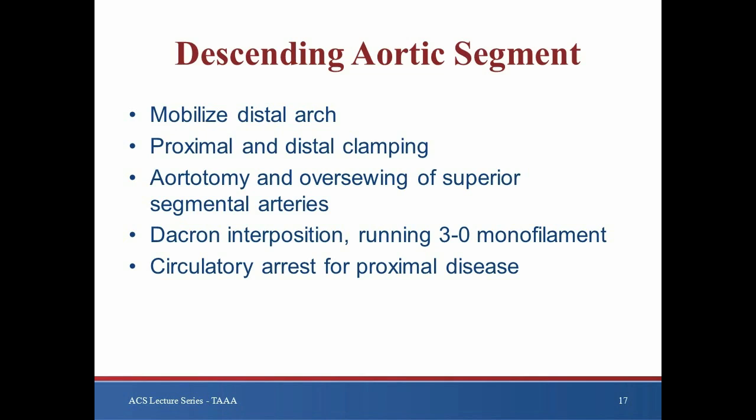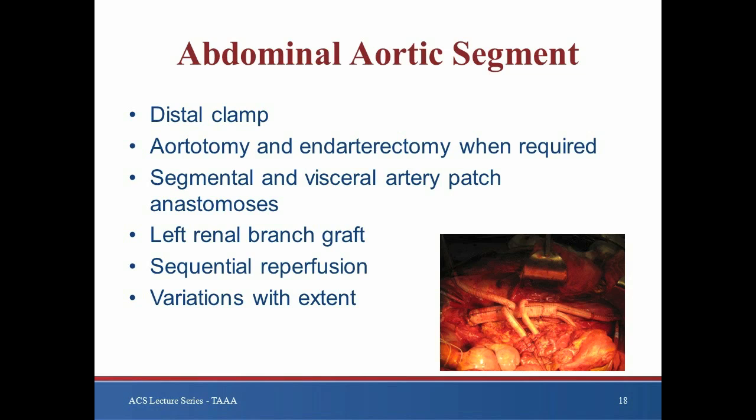At our institution, the proximal clamp is usually left in place for the remainder of the operation, unless it was placed proximally to take off the left subclavian, to avoid any possibility of retrograde embolism to the cerebral circulation. Special considerations are required in patients necessitating circulatory arrest because of aneurysmal disease of the arch, rupture, aortic size, or calcification. After cooling to the appropriate level, the proximal anastomosis is performed in the same fashion under circulatory arrest with subsequent de-airing of the arch and re-establishment of antegrade perfusion prior to proceeding with the distal anastomosis.